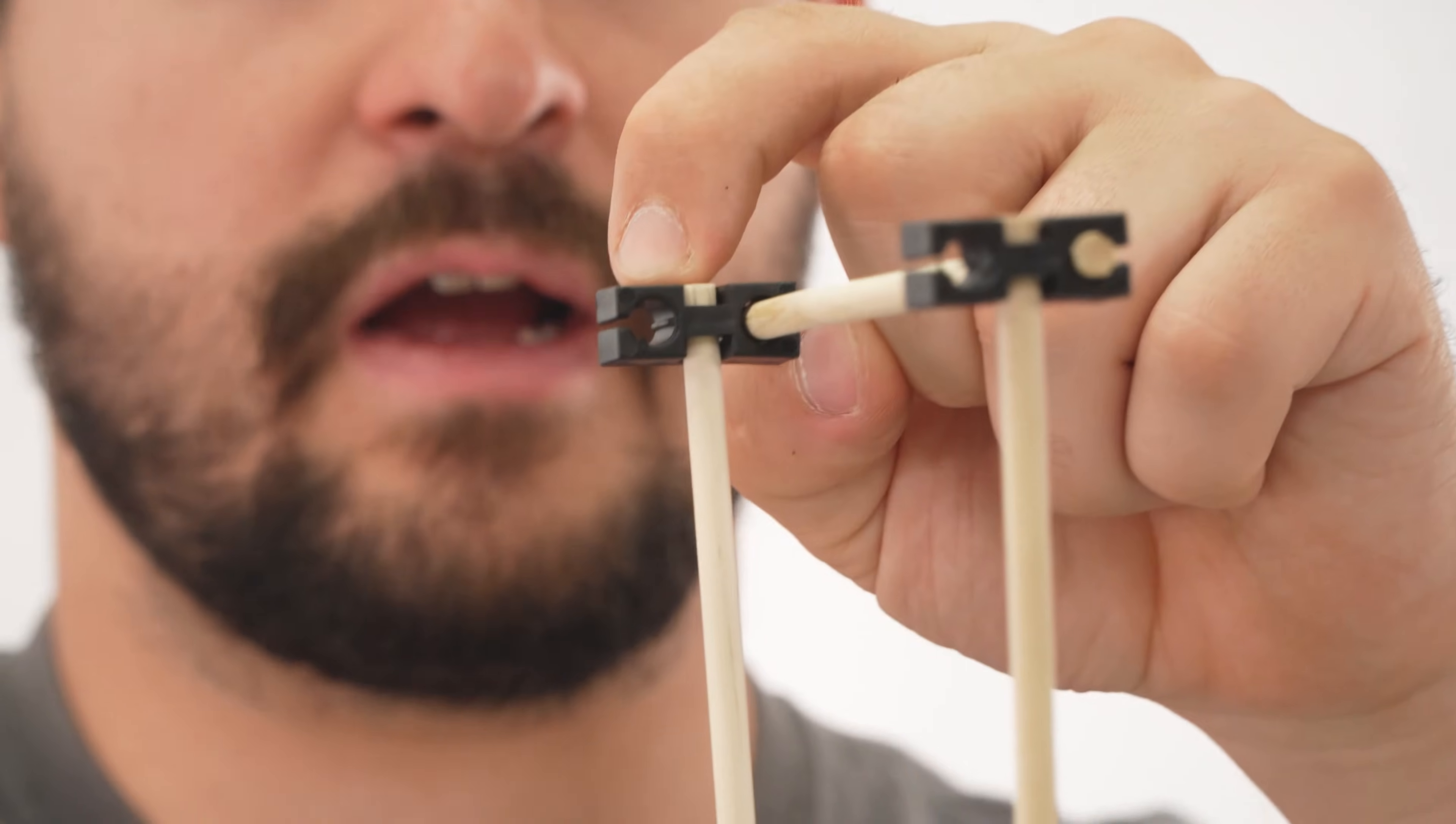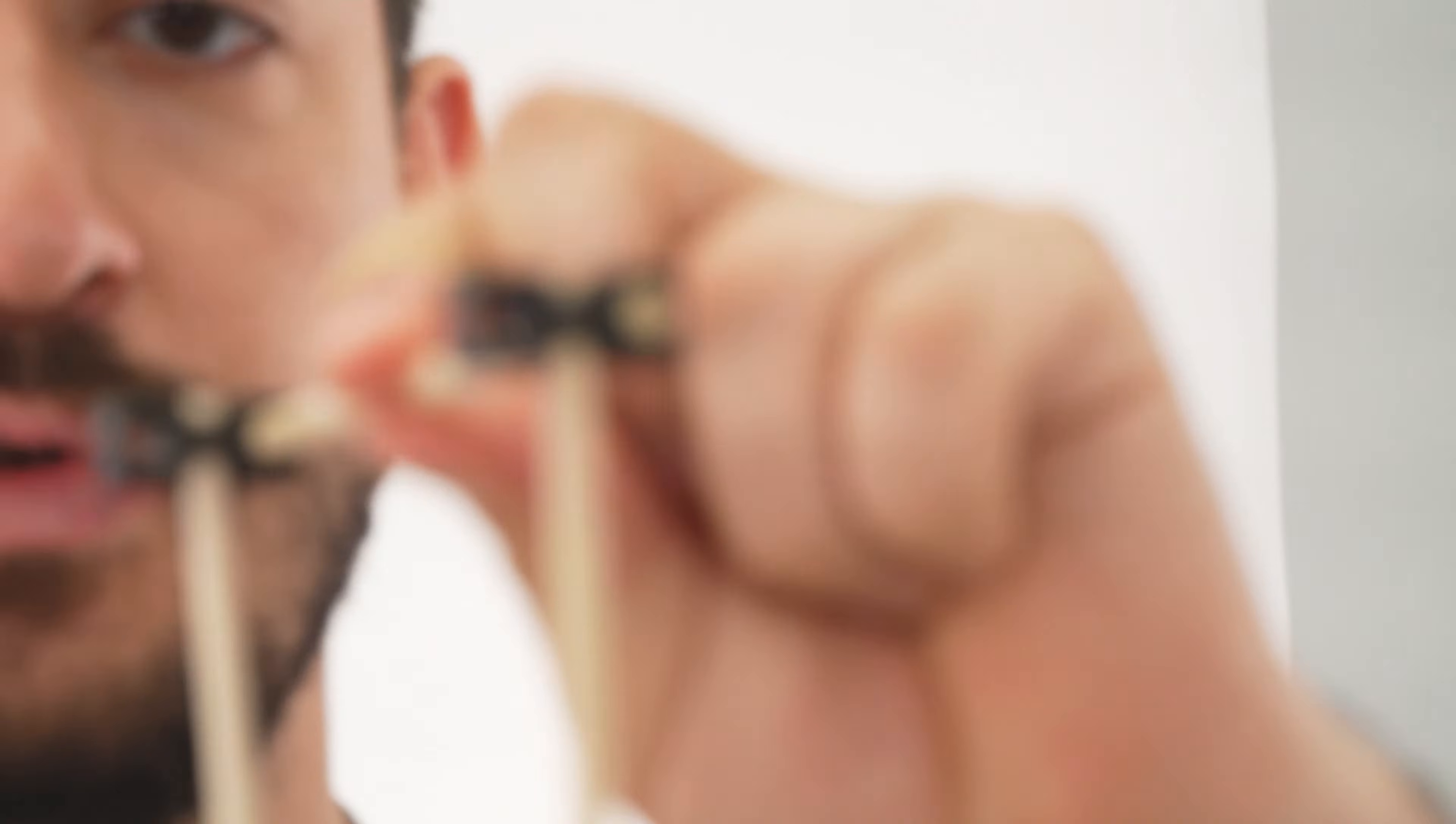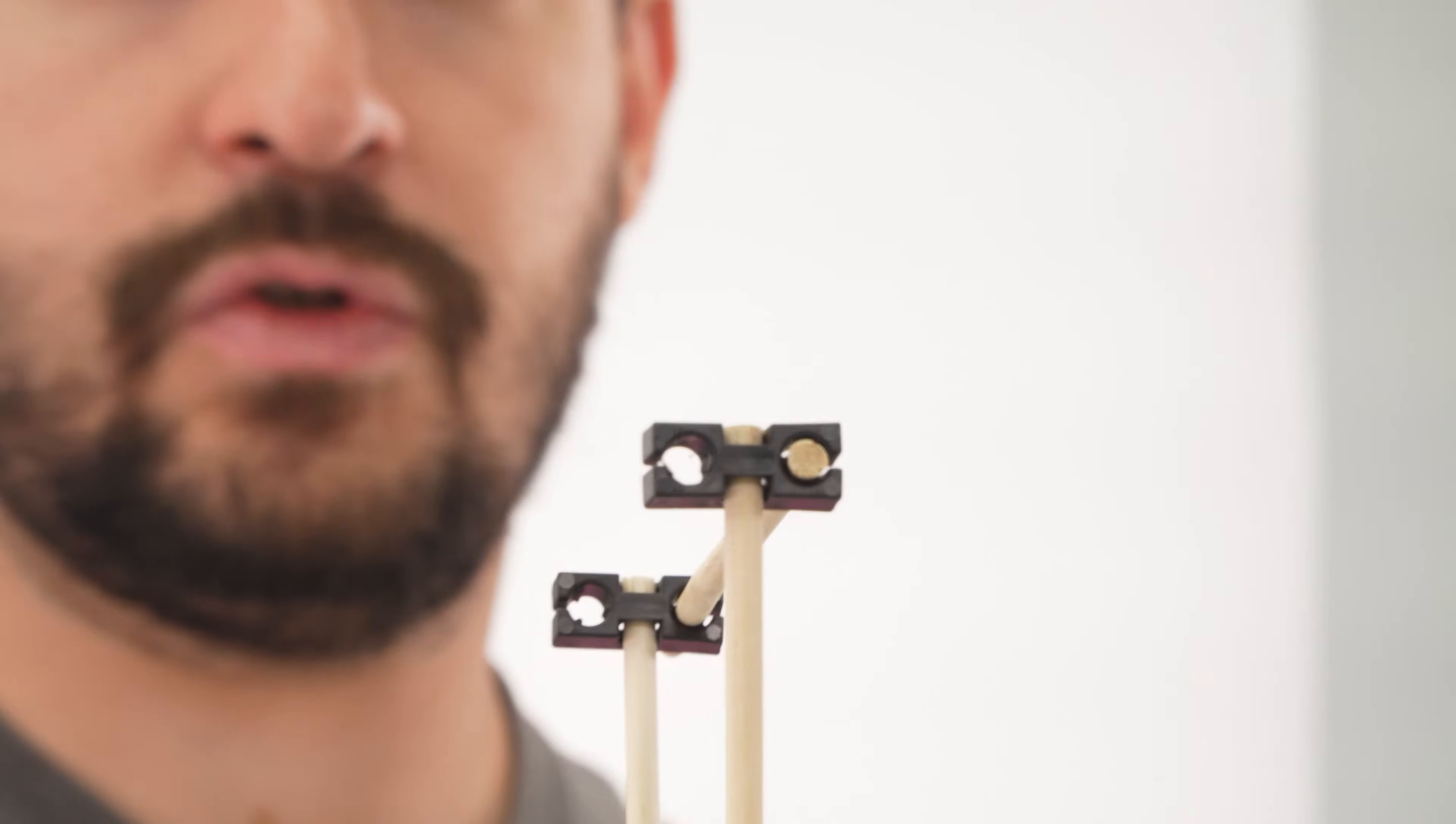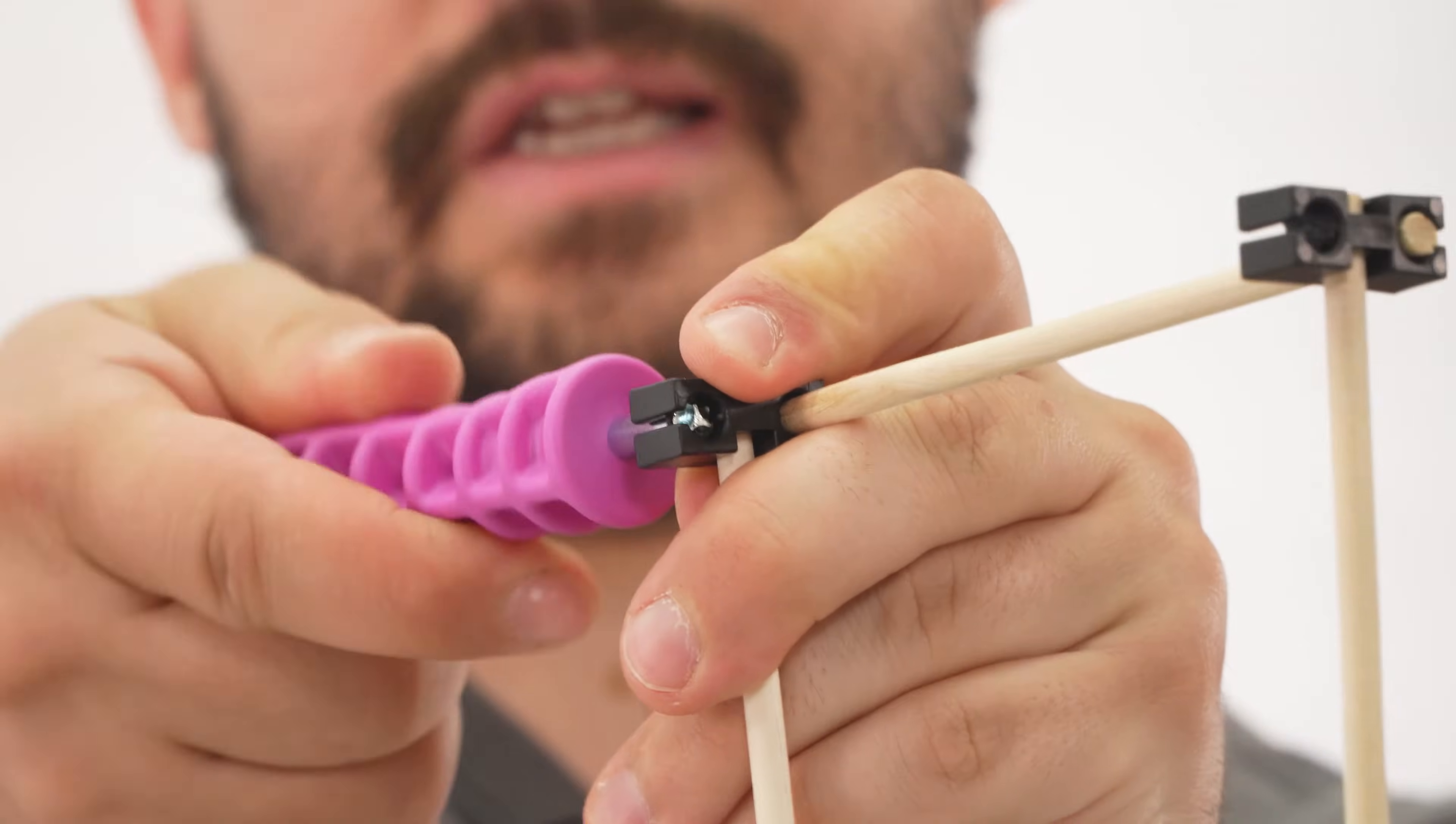The teeth in this block will hold the dowel in place so it can't move, like this one here. Once you remove the teeth, the dowel can slide and spin freely. So we want to remove the teeth from both of these blocks so that we can spin a dowel through them.